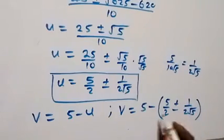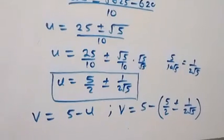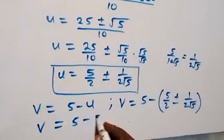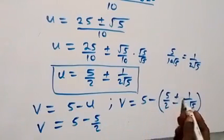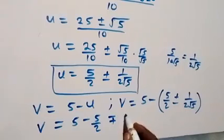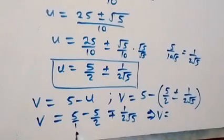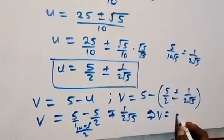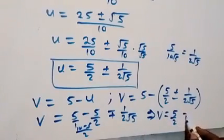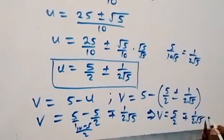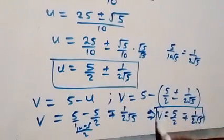Since v equals 5 minus u, substituting gives v equals 5 minus (5 over 2 plus or minus 1 over (2 root 5)). Simplifying: 5 minus 5 over 2 gives 5 over 2, and the sign flips, so v equals 5 over 2 minus or plus 1 over (2 root 5).